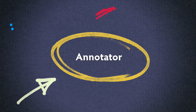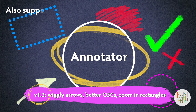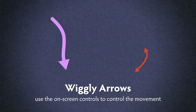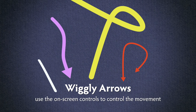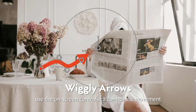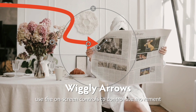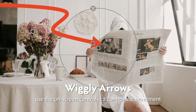Here's what's new in the latest free update to Fun With Stuff Annotator. Wiggly arrows. Alongside all the existing arrows, there's also a new wiggly option, which lets you control not just where an arrow points, but how it gets there.